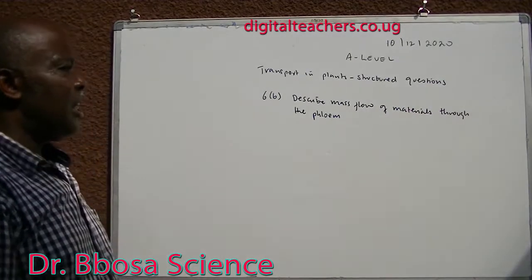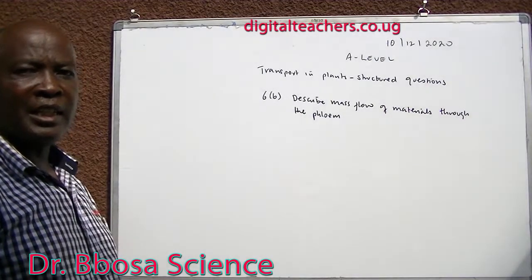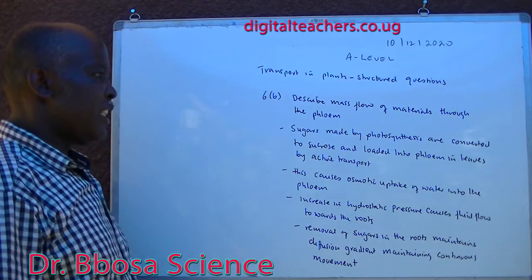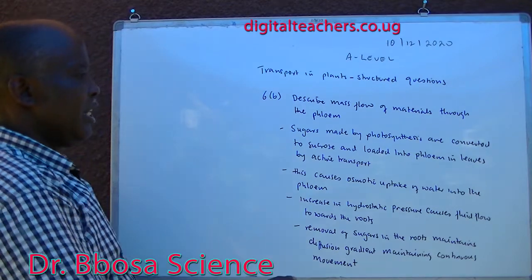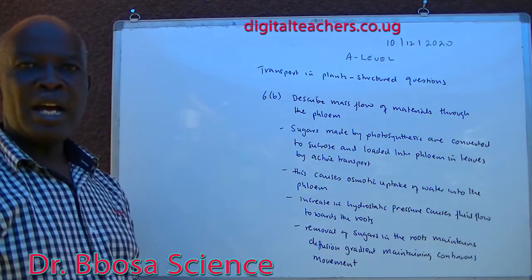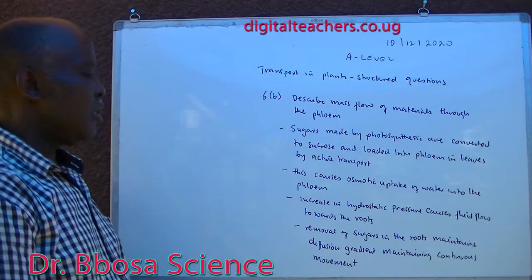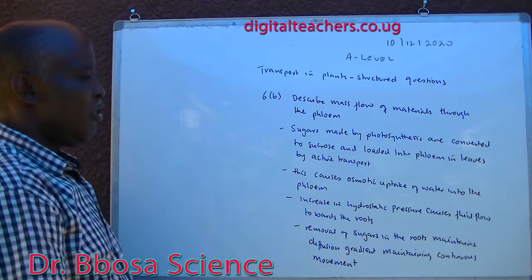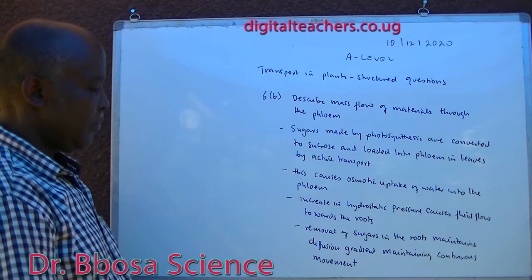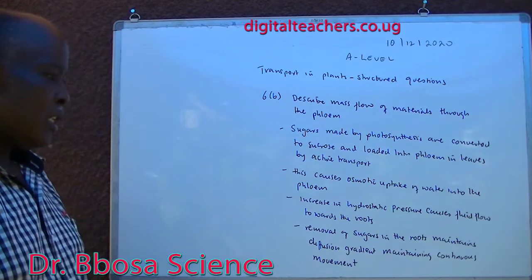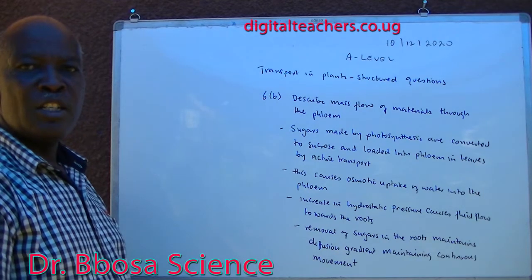Six B: describe mass flow of materials through the phloem. Sugars made by photosynthesis are converted to sucrose and loaded into the phloem in the leaves by active transport. This causes osmotic uptake of water into the phloem. Increase in hydrostatic pressure causes fluid flow towards the roots. Removal of sugars in the roots maintains a diffusion gradient, maintaining continuous movement.